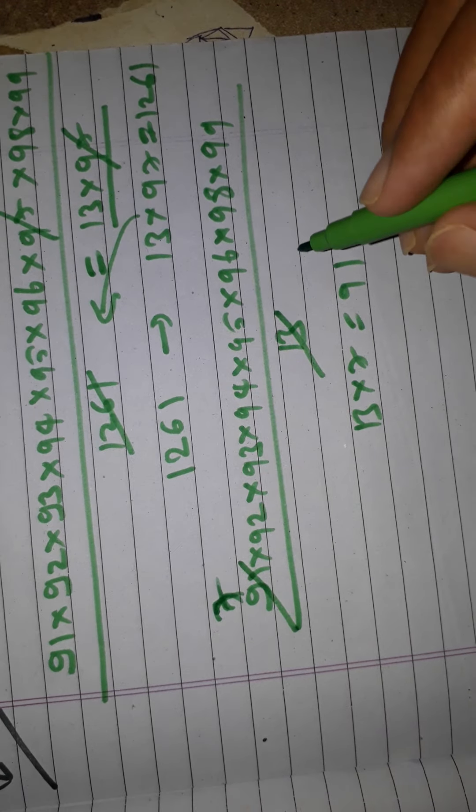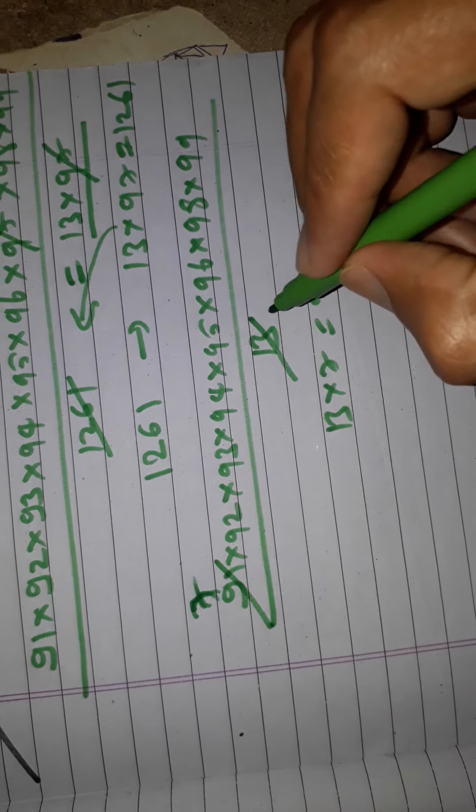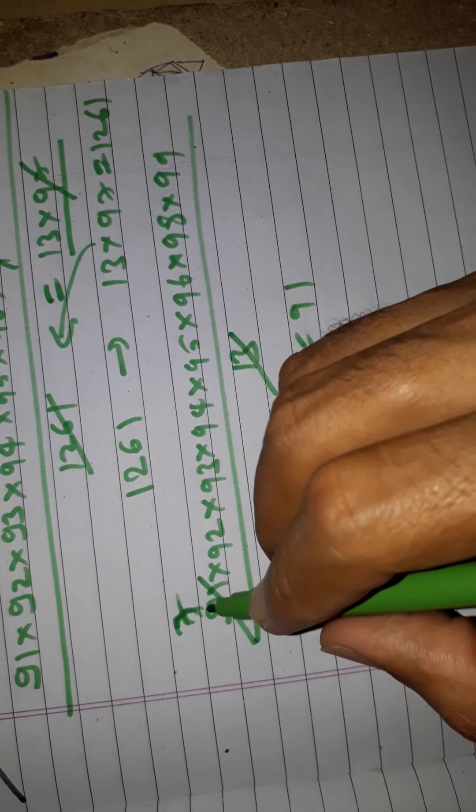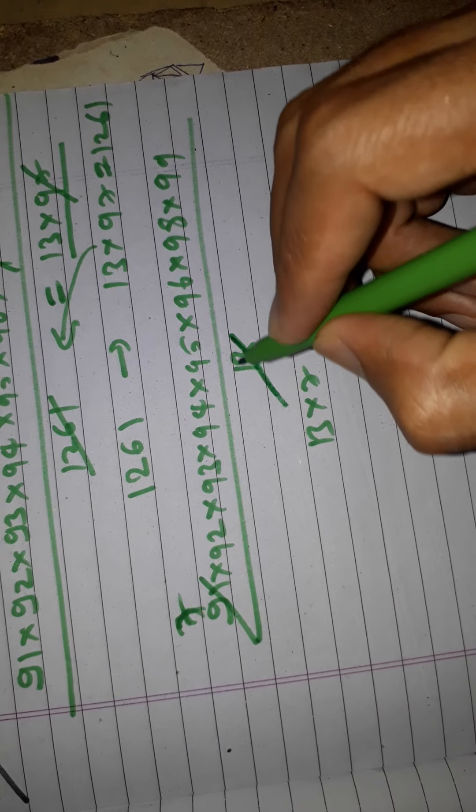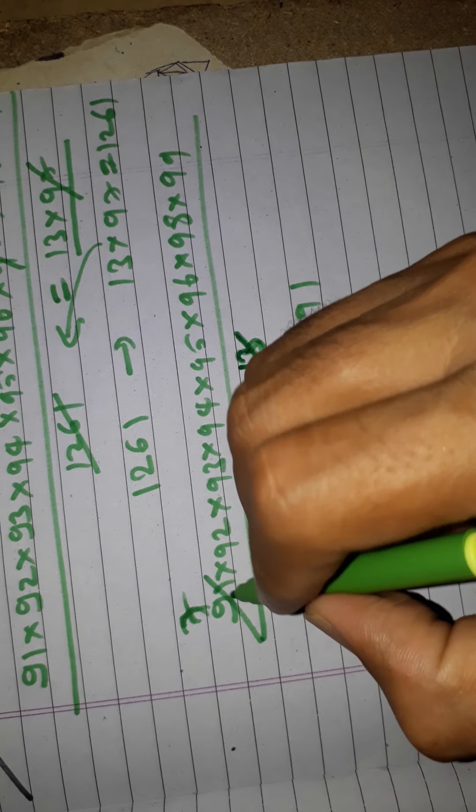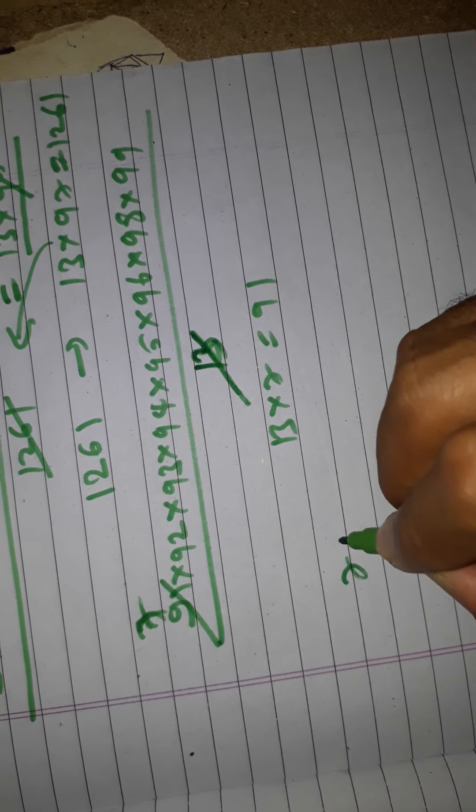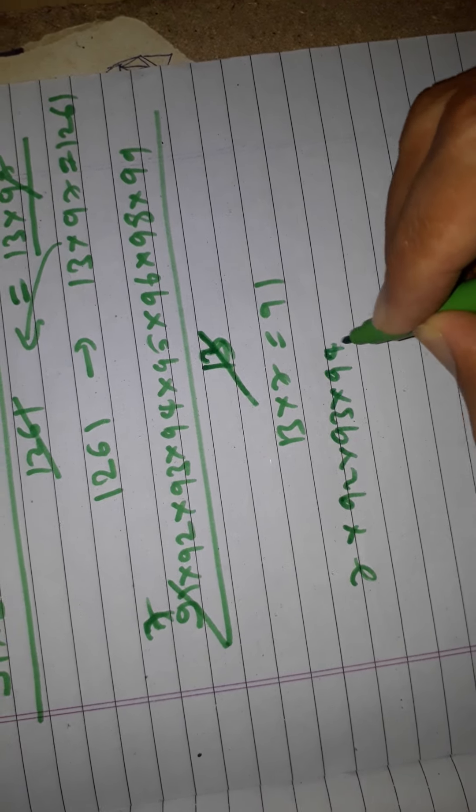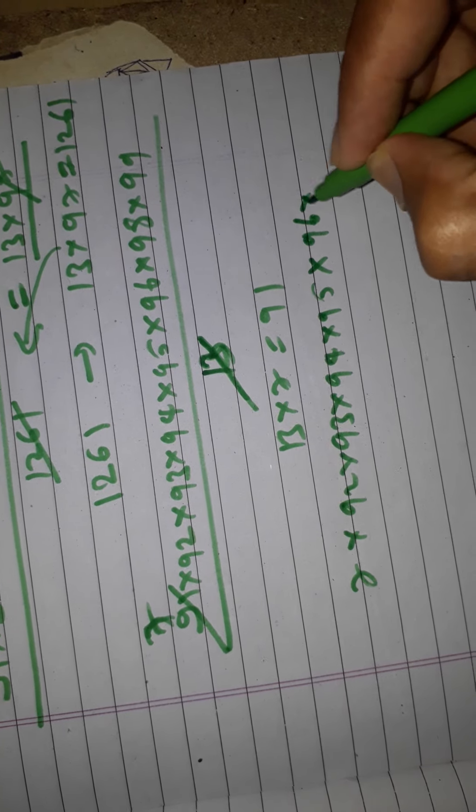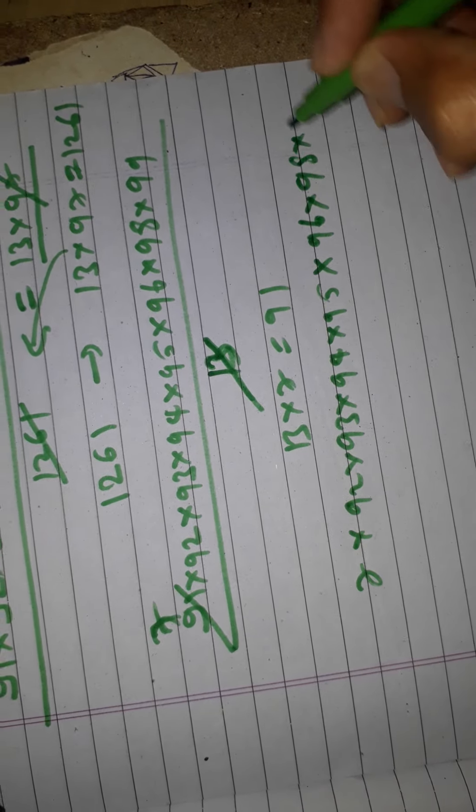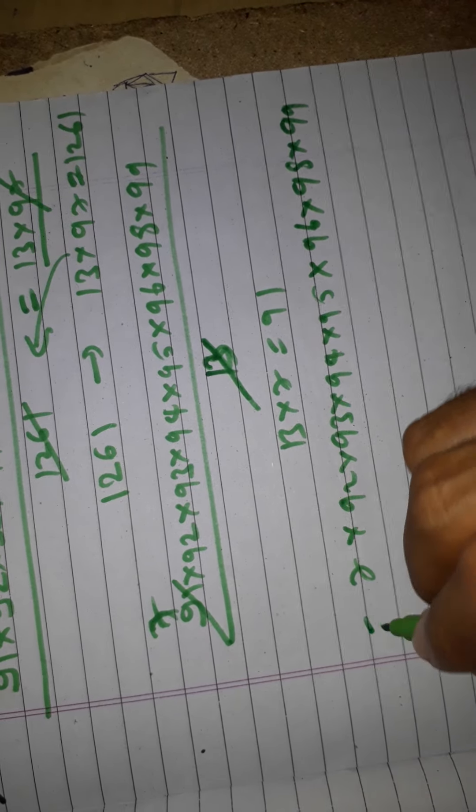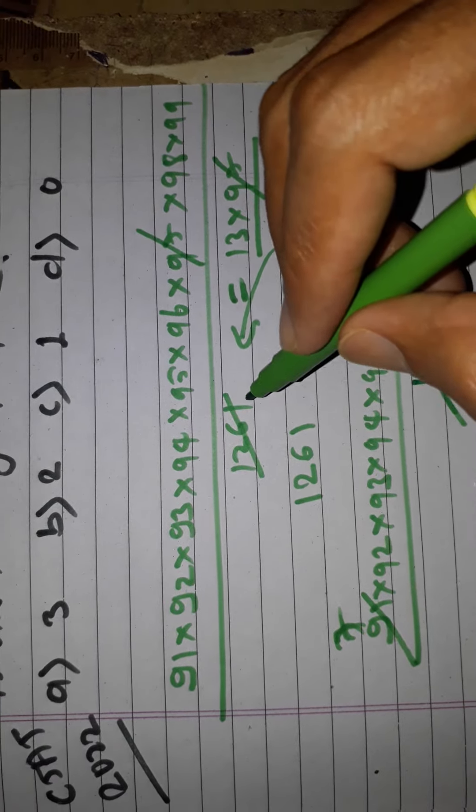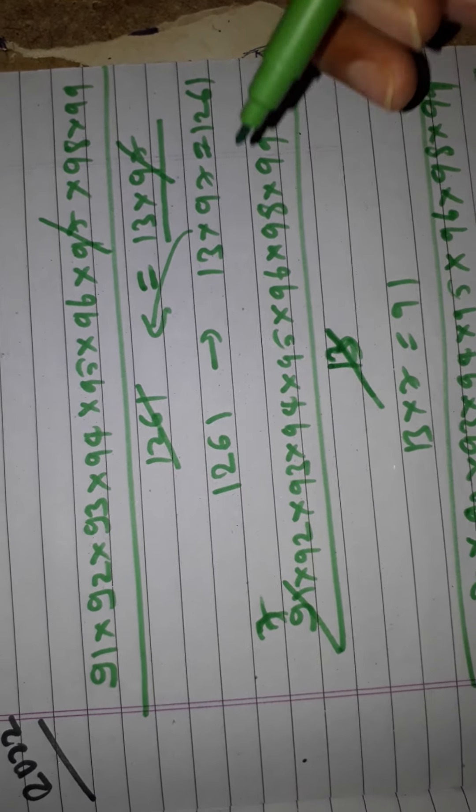After that, the remainder is zero. The total value will be divisible by 13. The remaining factors are 7 × 92 × 93 × 94 × 95 × 96 × 98 × 99. This value of 1261 is completely divisible, and the remainder is 0.